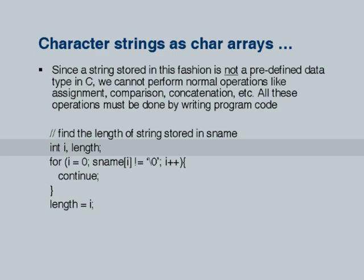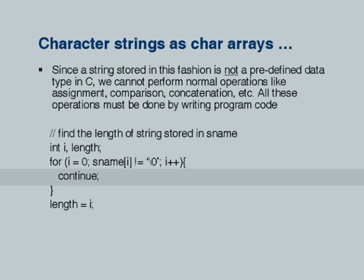Here is a small code: 'int i, length; for(i=0; sname[i] != "\0"; i++) continue;'. Please notice that this continue statement merely means go ahead — even if I had not written continue, it would have continued automatically. What it will do is start the loop with i equal to 0, then examine the 0th element, first element, second element, and so on. Every time it will check the condition: is the i-th element not equal to backslash 0? If it is some other valid character, it will continue.